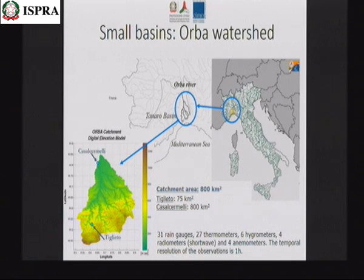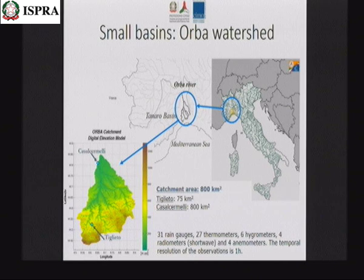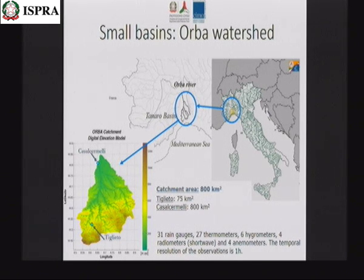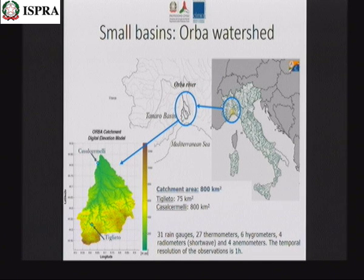We tested the rainfall HSAF products on a small catchment — small compared to global scale — the Orba River in western Italy. We tested the product at two different scales: one on the order of 1000 square kilometers and the other on the order of 100 square kilometers.